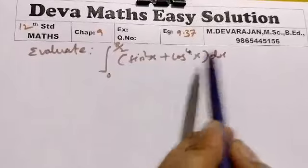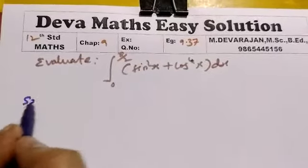Evaluate the integral from 0 to π/2 of sin squared x plus cos to the power 4x dx. Solution: